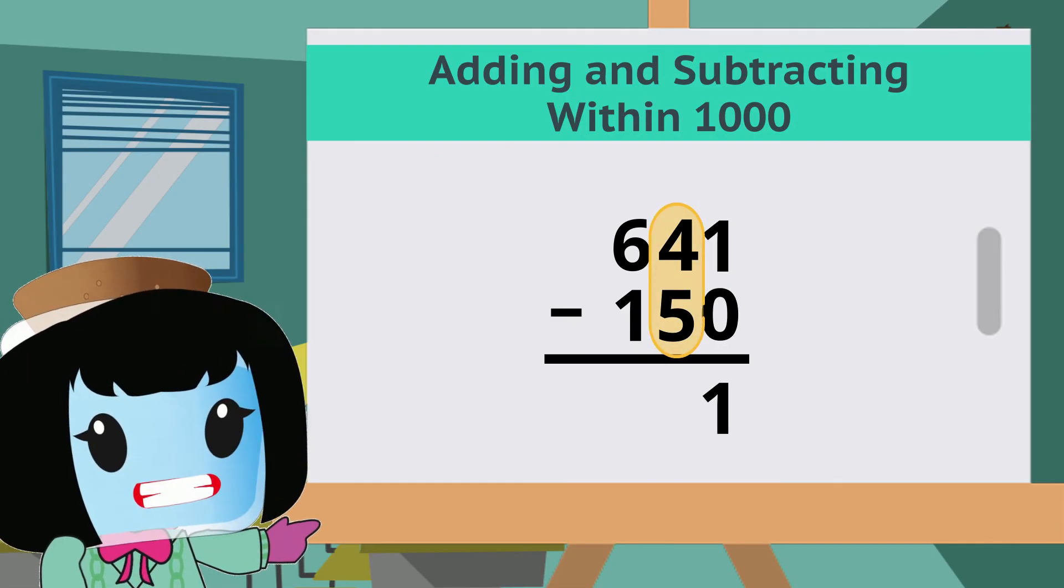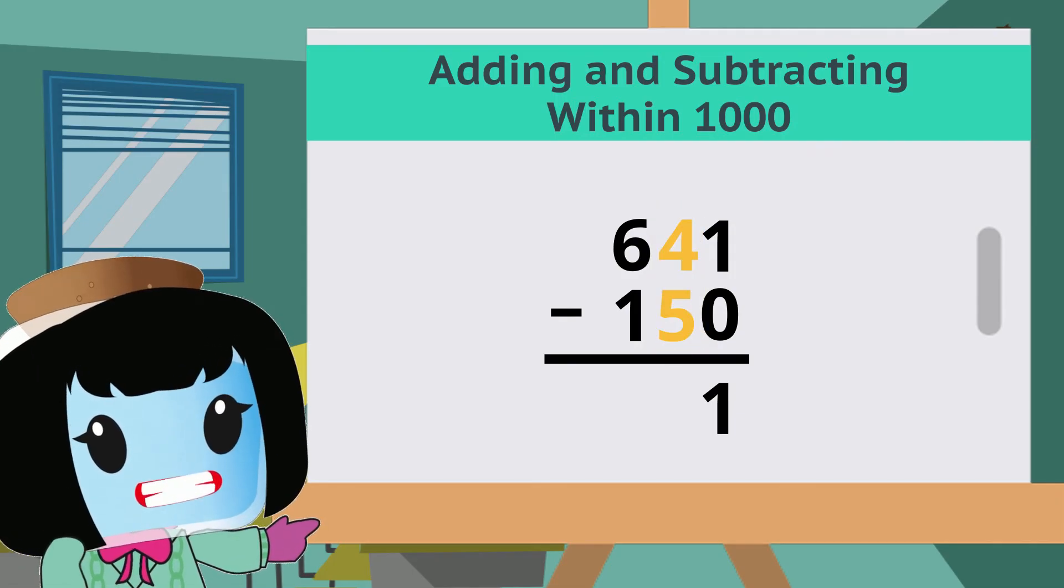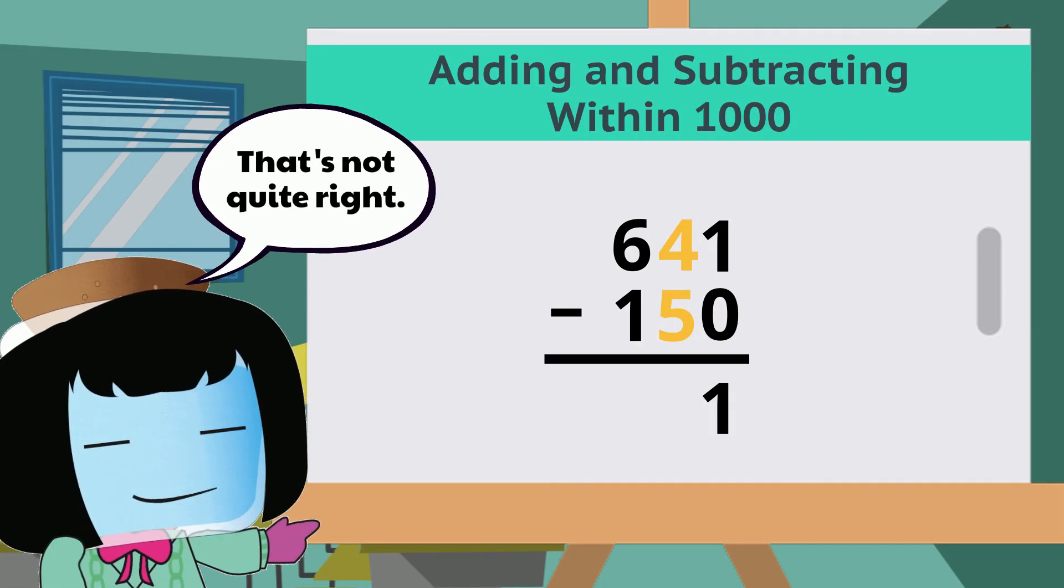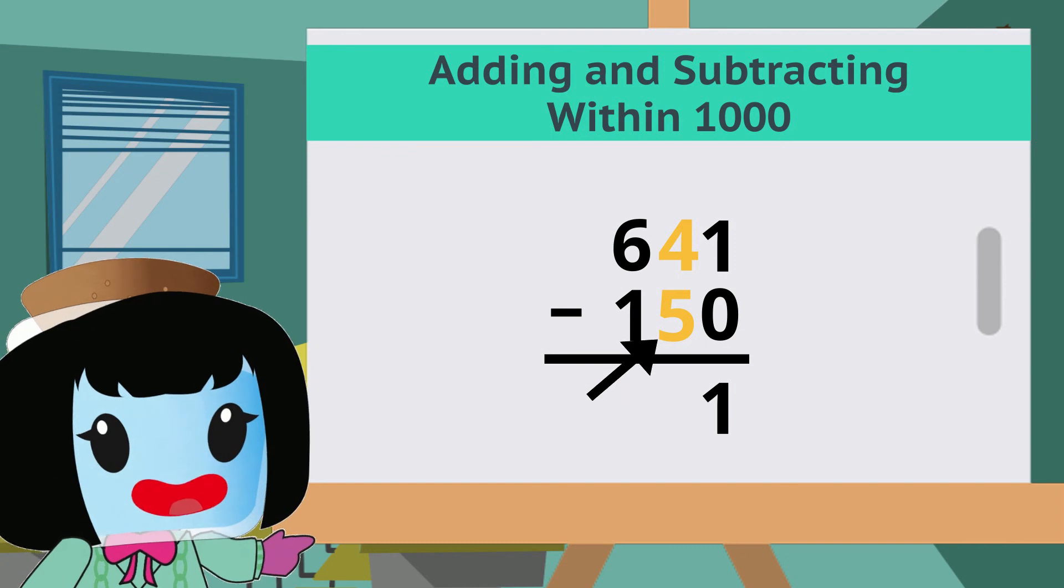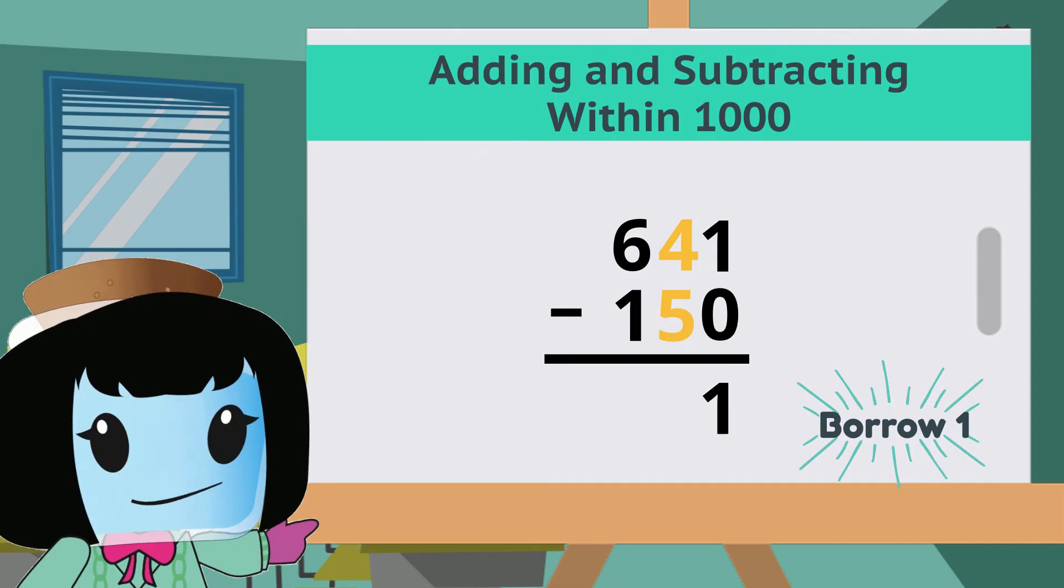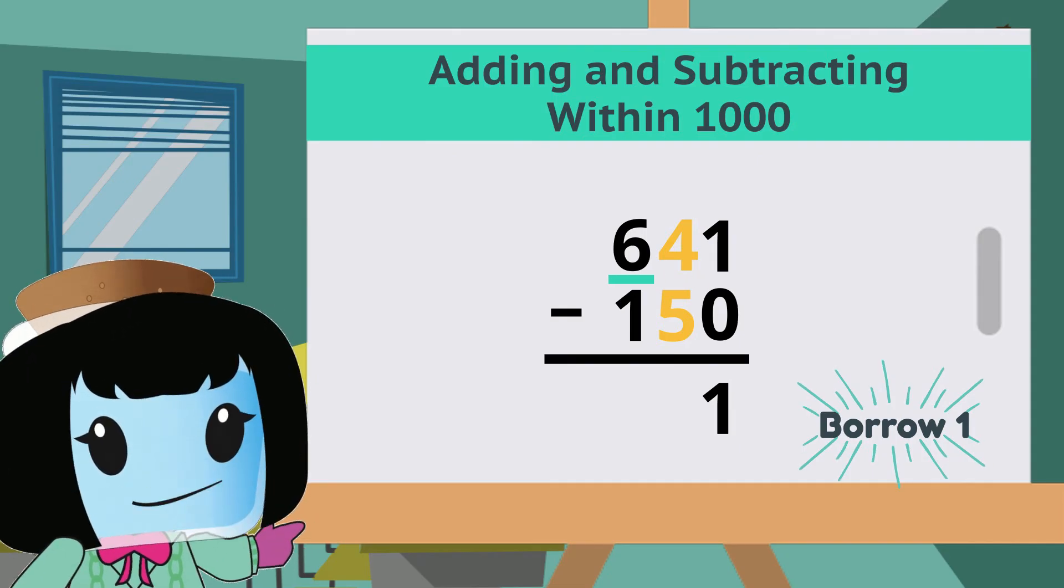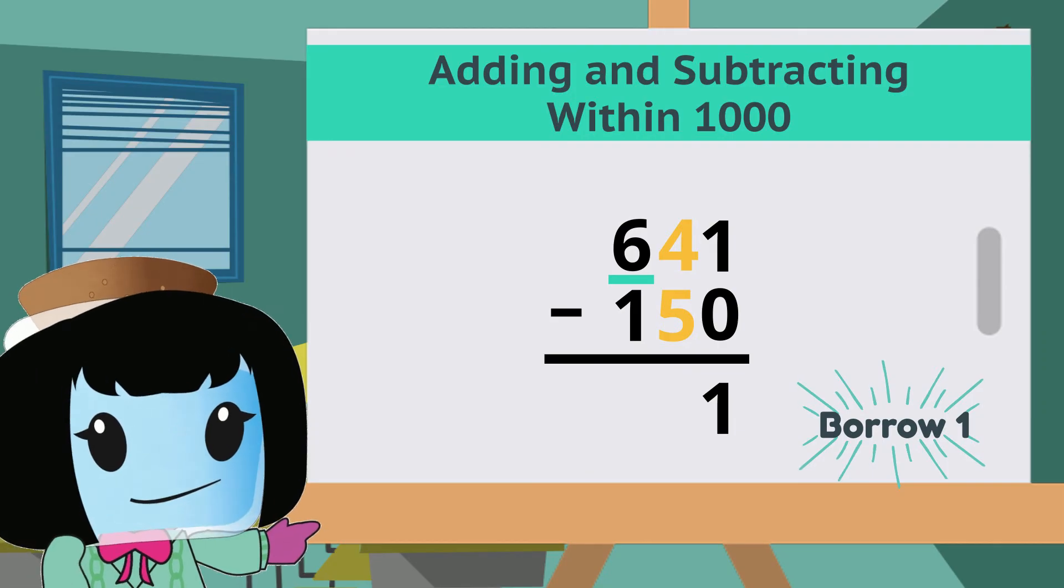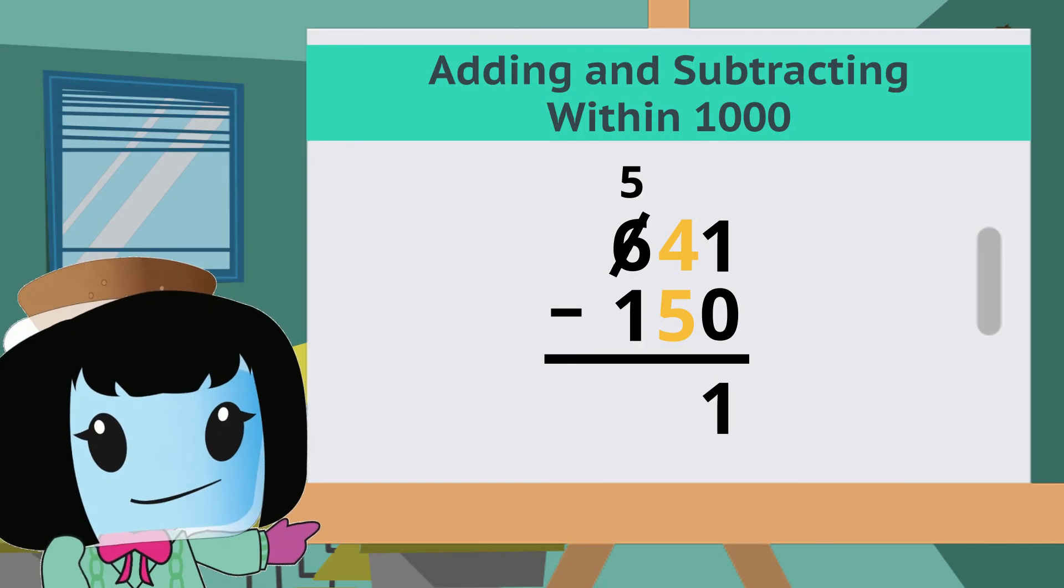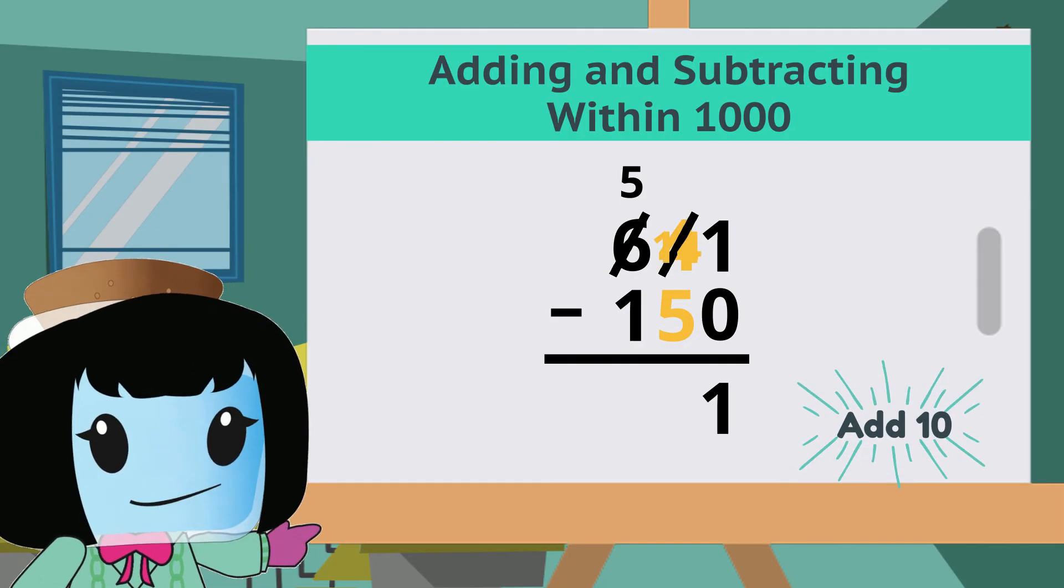Then the tens column. 4 minus 5. Hmm. That's not quite right. When the number being subtracted is larger, we need to borrow 1 from the place value to the left. In this case, we borrow 1 from 6. The 6 becomes 5, and we add 10 to 4, so it becomes 14.